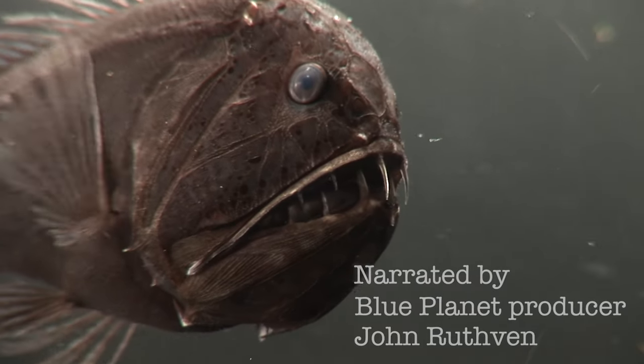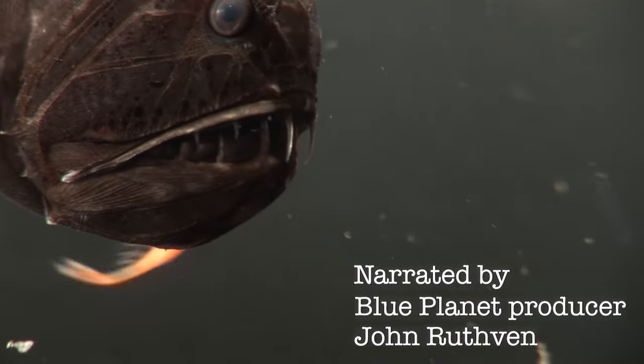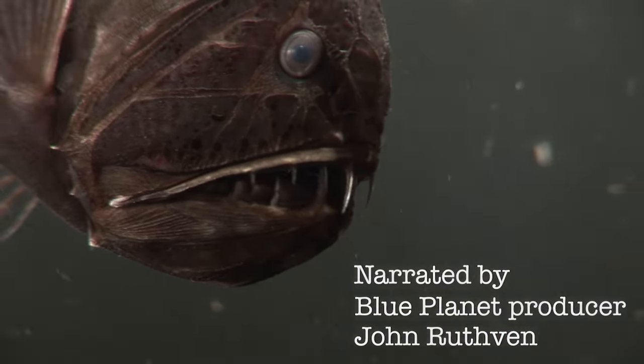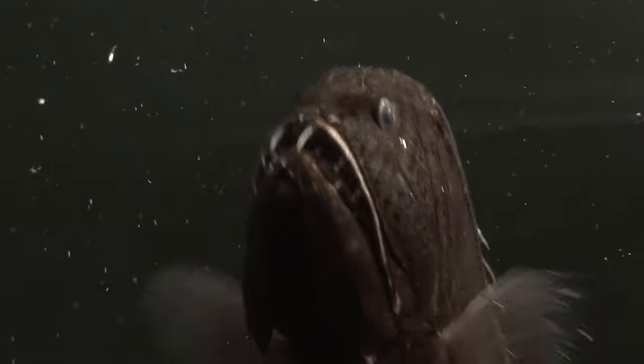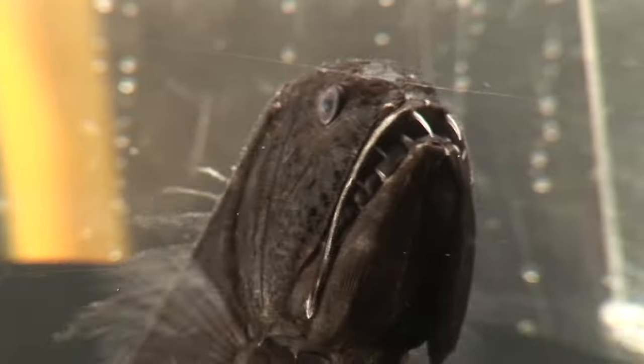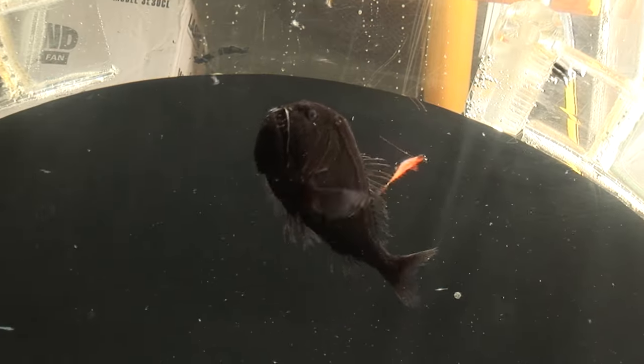The fangtooth. It's a strange-looking fish, and has no close relatives, although there are two species in its group. Because it looks so scary, it's sometimes called the ogre fish, or the sabre tooth. And although they look scary, they're only about as long as your hand.